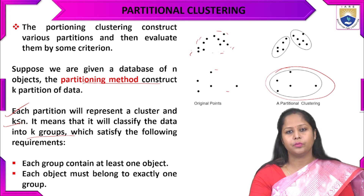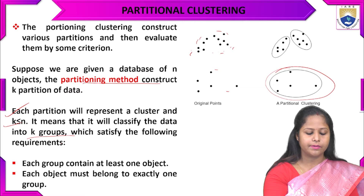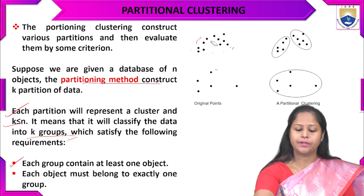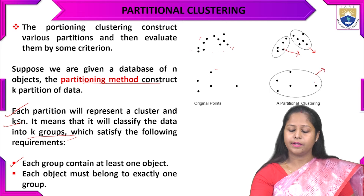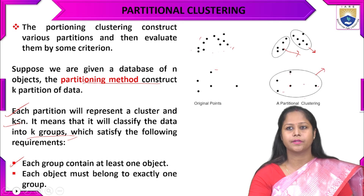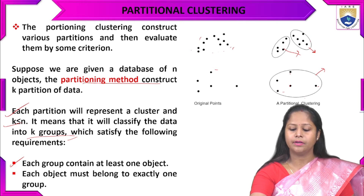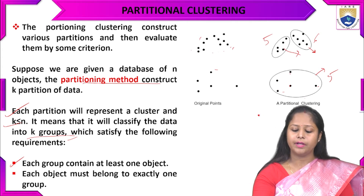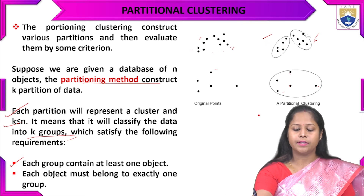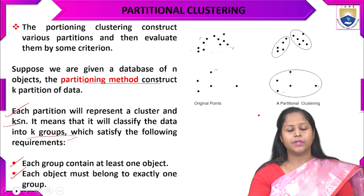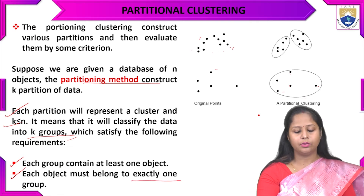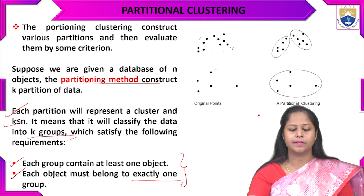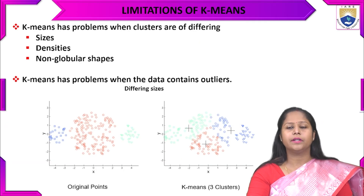The k groups must satisfy the following requirements: first, each group must contain at least one object; second, each object must belong to exactly one group. These are the two requirements we need to fulfill while classifying data points in partition clustering. We covered the K-means algorithm in detail.